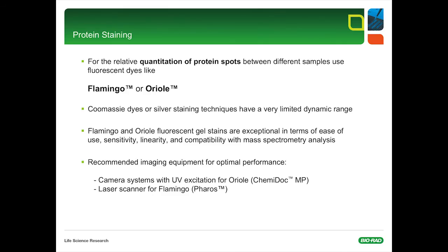This slide is about protein staining, which is very important for quantitation. For the relative quantitation of protein spots between different samples, please use fluorescent dyes like Flamingo Pink or Oriole, because Coomassie or silver staining techniques have a very limited dynamic range, and it's not possible with those dyes to do accurate comparison between samples. Flamingo Pink and Oriole fluorescent gel stains are exceptional in terms of ease of use, sensitivity, linearity, and compatibility with mass spectrometric analysis. For example, protein staining with Oriole is a simple one-step staining process without protein fixing and no destaining. Protein samples can be accurately visualized and quantitated in less than two hours.